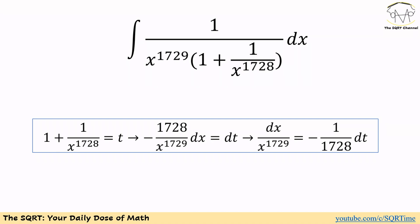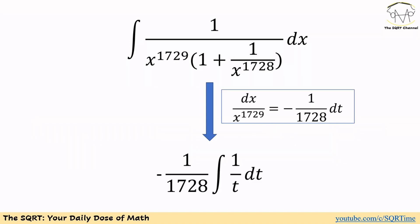From here we are going to use a new variable for 1 plus 1 over x^1728 — let's use t. Taking the derivative from both sides, we get negative 1728 over x^1729 dx equals dt. Since we have dx in the integral, we rearrange to find dx over x^1729 equals negative dt over 1728.